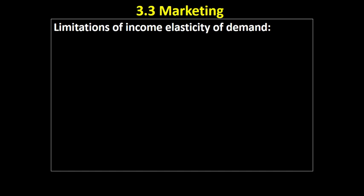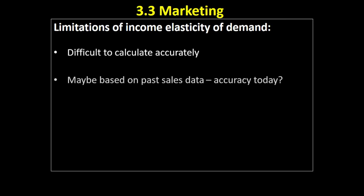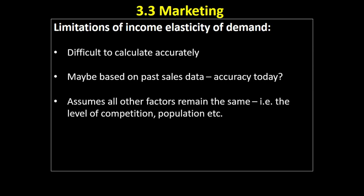What are the limitations? Very similar to price elasticity of demand, it's going to be difficult to calculate accurately. It's very difficult to use past data — for example, incomes on average increased by a certain amount while demand for a product changed by another amount. But that was the past, and your business may be based in a specific geographical area where accurate income change data is hard to obtain. It's based on past information which may not be accurate today, and it assumes all other factors remain the same. Maybe when incomes increased in the past, there weren't many competitors, but there are more now, or your brand image has changed. Lots of factors can change that the calculation might not take into account.